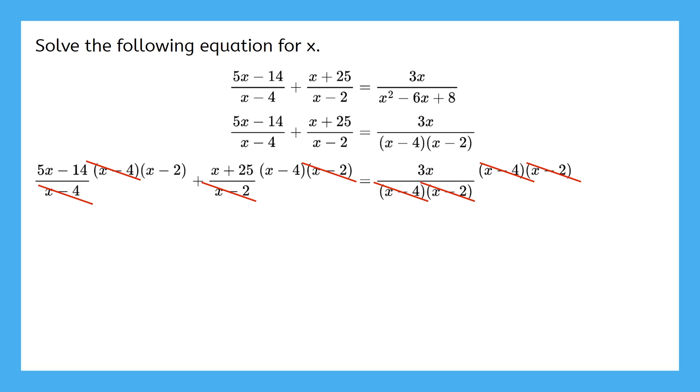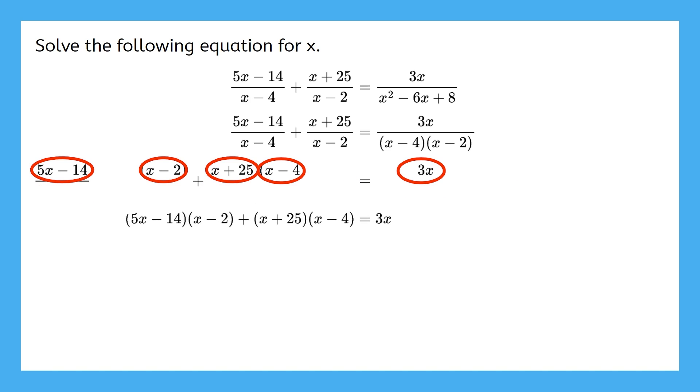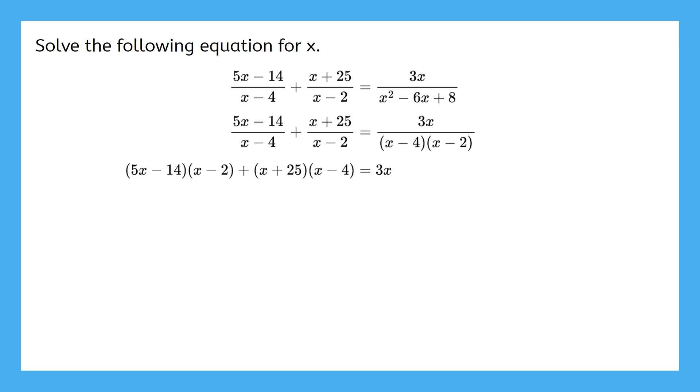And then, this is all that didn't cancel. Now, we get to write only the terms that didn't cancel. We need to take care of the distribution next. So, pause here and finish solving the equation, making sure to check for extraneous answers. We distribute the first set of parentheses and get this trinomial. Then, we do the same with the next set of parentheses. Now, what do we need to do next?